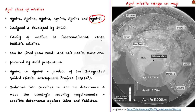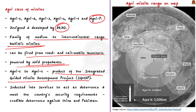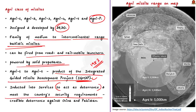These missiles belong to the family of medium to intercontinental range ballistic missiles. They can be fired from road and rail mobile launches and are powered by solid propellants. The Agni missiles are a product of the Integrated Guided Missile Development Project, IGMDP, launched by the Ministry of Defense in 1983. We have inducted Agni missiles into service to act as deterrence and meet the country's security requirements. The Agni series is at the core of India's deterrence in the larger context of the Sino-Indian power equation.